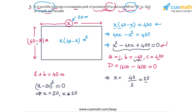The dimensions of the rectangular park are: one side equals 20 meters, and the second side is 40 minus 20, which is also 20 meters. So it's actually a square that makes this possible — a square of side 20 meters. For a square of side 20 meters, the perimeter will be 80 meters and the area will be 400 meters square.